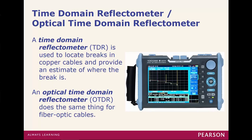Moving on, a time domain reflectometer and an optical time domain reflectometer. This will be used to test for breaks in a cable. It essentially pings down the line, sending an impulse, and once it detects a break, it reflects back. The mechanism will then tell you the distance from the start to where that break is. Optical — that's fiber.